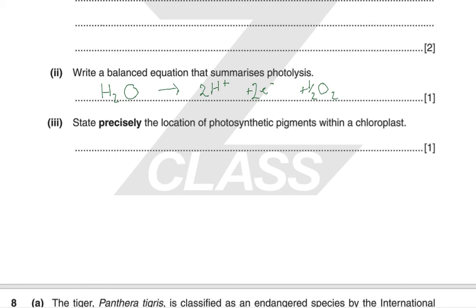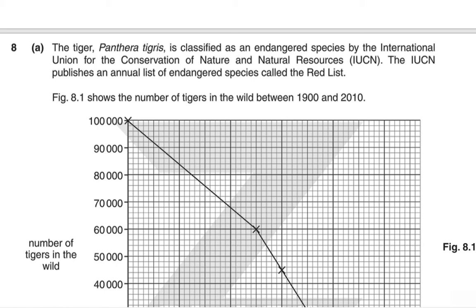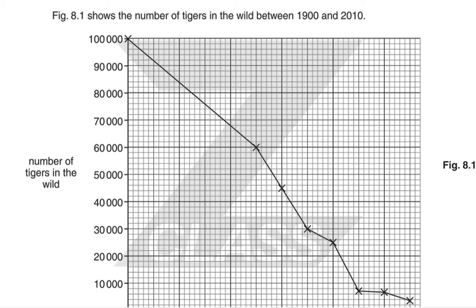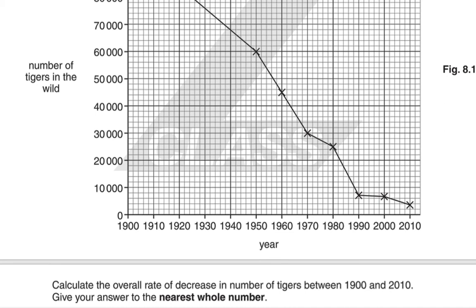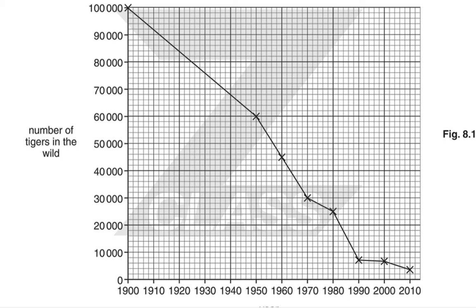The tiger is classified as an endangered species by the IUCN, which publishes an annual Red List of endangered species. Figure 8.1 shows the number of tigers in the wild between 1900 and 2010. Calculate the overall rate of decrease between 1900 and 2010 to the nearest whole number. One way to do this is to calculate the difference in tiger numbers between 1900 and 2010 and divide by 110 years, which gives approximately 873 tigers per year.